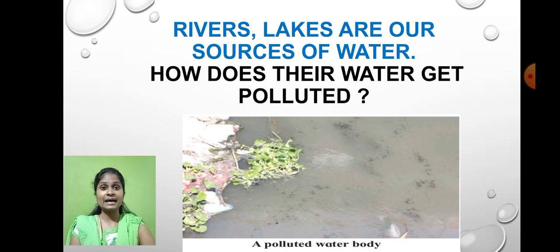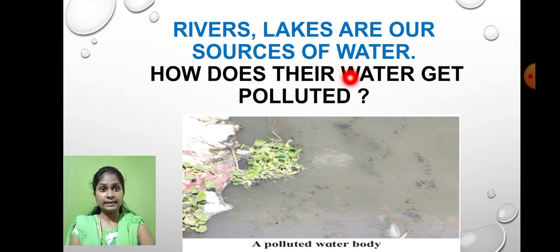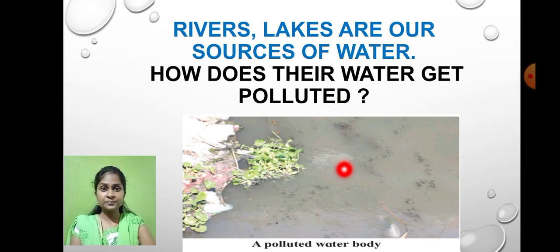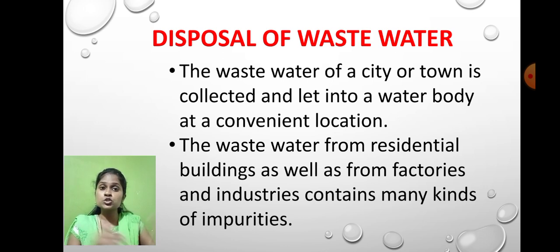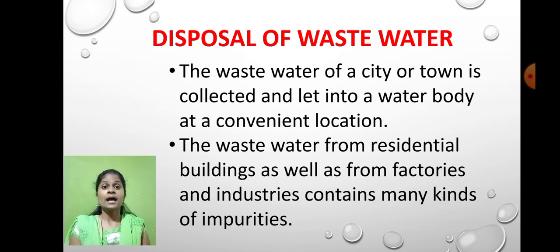Rivers and lakes are sources of water for us. Most of the time, river bodies and lakes get polluted. How does this happen? Most of the waste water formed at home — washroom waste, toilet waste, urinary waste, and water left over after washing clothes and utensils — is disposed of into rivers and lakes.